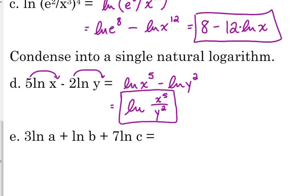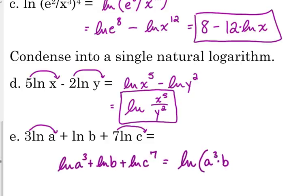3 natural log of a plus the natural log of b plus 7 natural log of c. Remember, we can do it with more than two terms, but same thing still applies. We have to move those coefficients. So the natural log of a³ plus the natural log of b plus the natural log of c to the seventh. We're adding all those, so we can multiply them inside of a single logarithm. Natural log of a³bc to the seventh.